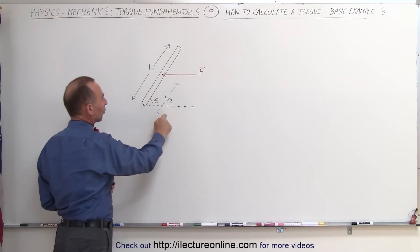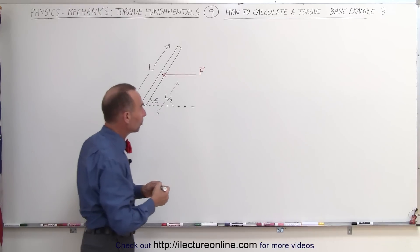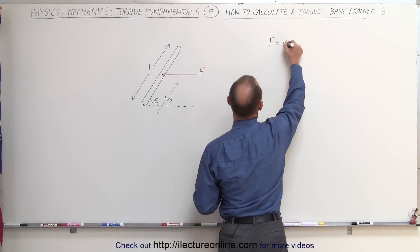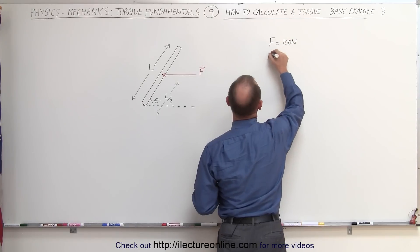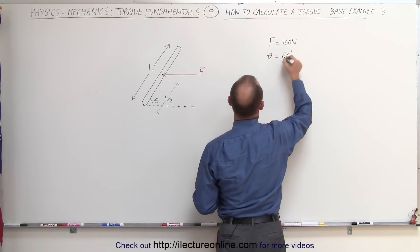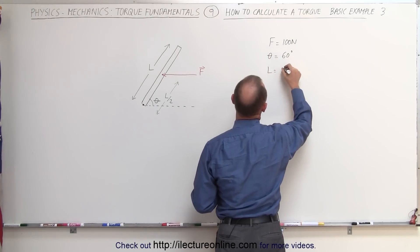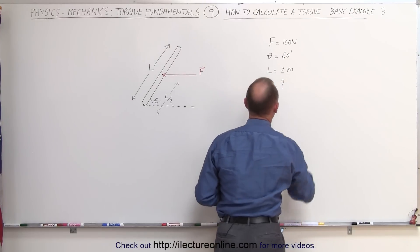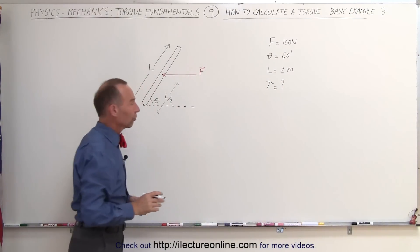The angle that the beam makes with the horizontal is equal to theta. Let's put some numbers in there. Let's say that the force is equal to 100 newtons. The angle theta is equal to 60 degrees. And let's say the length of the beam is 2 meters, and we're trying to find the torque caused by that force.